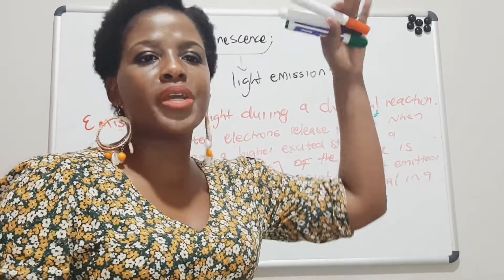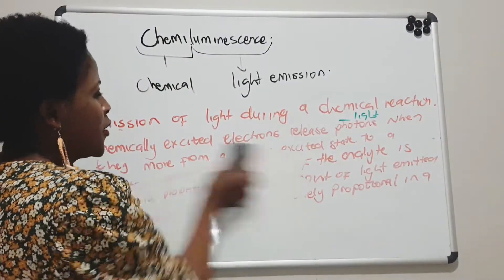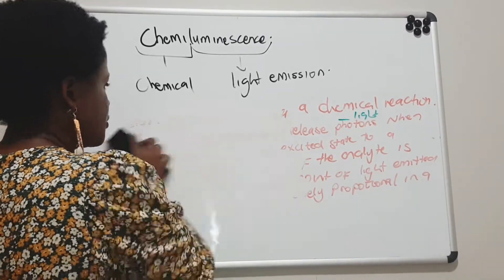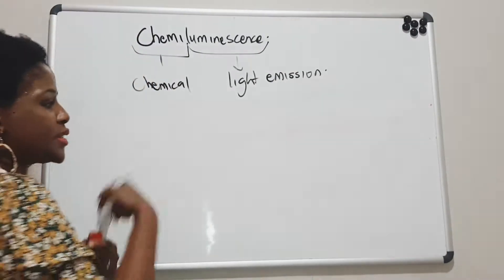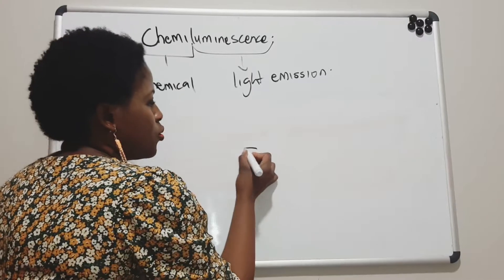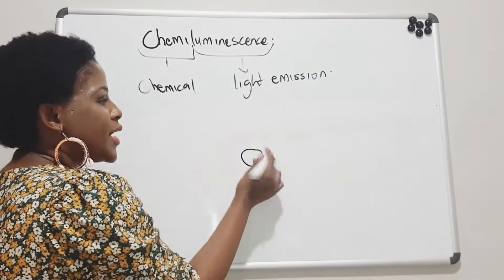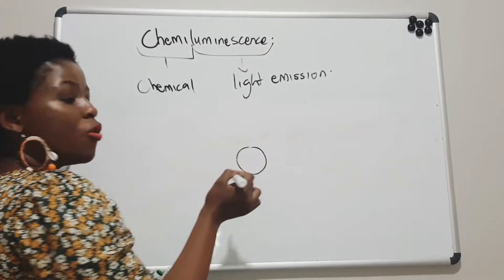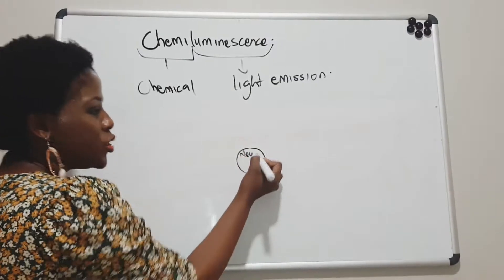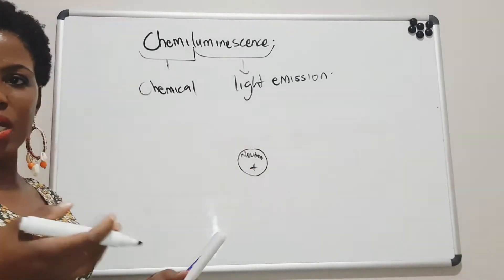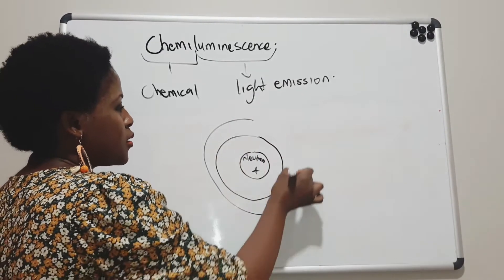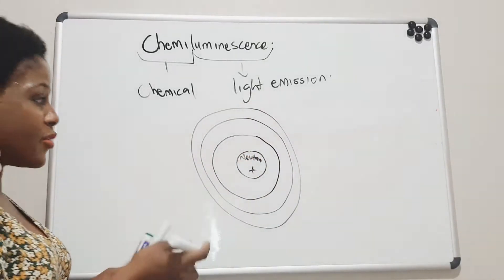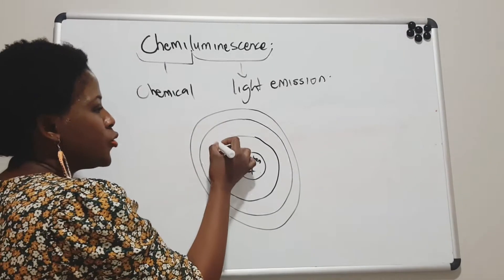Let me explain what the electronic ground state and higher excited electrons mean. In a substrate, which is made up of atoms, the atom has a nucleus. On the nucleus you get neutrons which are neutral, and protons which are positively charged. After the nucleus you start having orbitals, and on the orbitals you have your electrons, which are negatively charged.